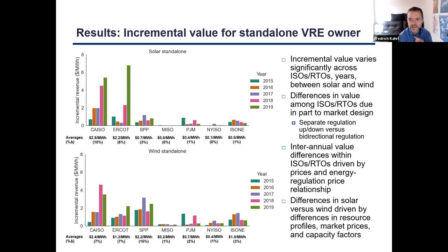The fourth key takeaway is that the difference between results for wind and solar has to do with wind having a higher capacity factor than solar. This means that wind's total AS market revenues, which tend to be higher than solar's in total, get spread over a larger denominator. So even though wind has higher total revenues than solar, they'll be smaller on a unit basis due to the higher denominator.